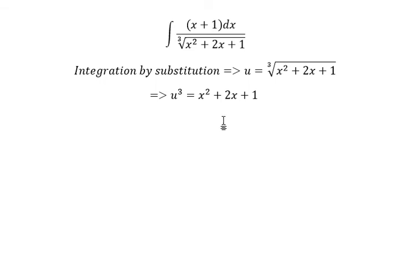Now we take the first derivative of the function. So we get 3u²du equal to 2x+2. Then we divide both sides by 2.